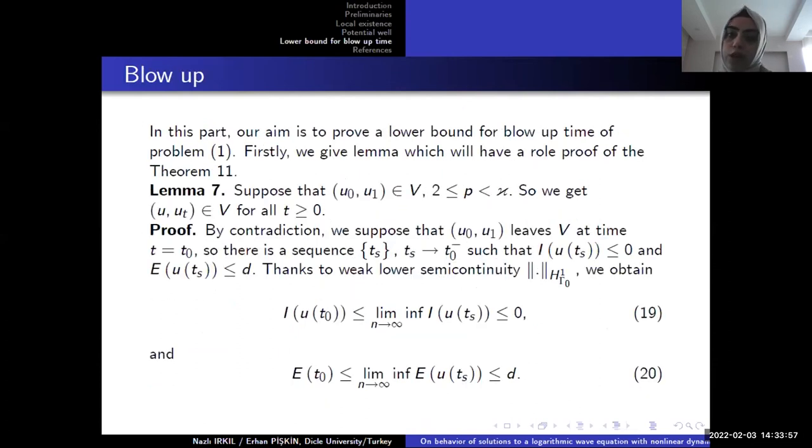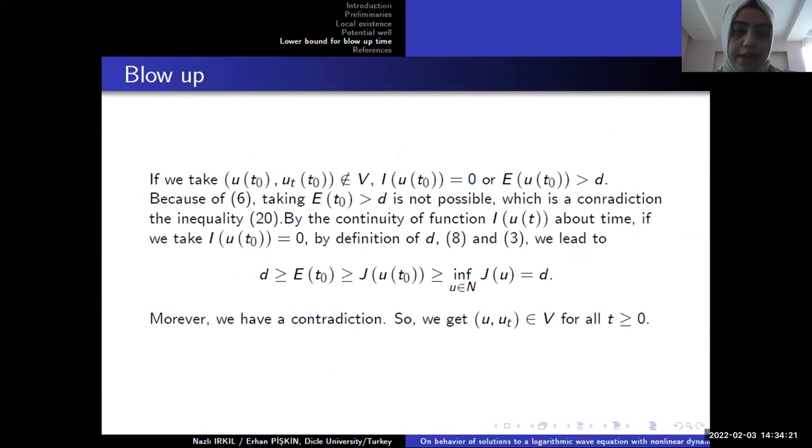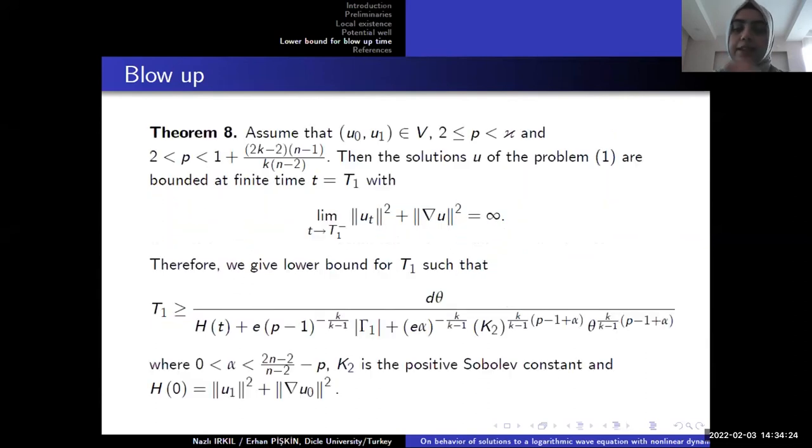Our aim is to prove the lower bound for blow-up time of problem one. Firstly, I say we must have that all of the solutions u and ut must be elements of V and we prove this by contradiction. You can see. Later our main theorem is as follows: we can say the initial conditions are elements of V and under these conditions over p, our problem, our solutions goes to infinity when time goes to T1 minus and we can have a lower bound for this.